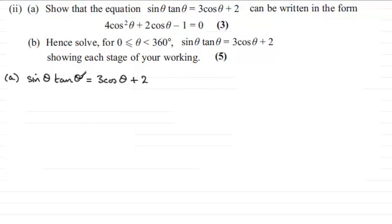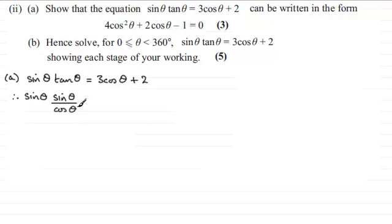Now tan theta, as we should be familiar with, is the same as sine theta divided by cos theta. So using that, we've got sine theta multiplied by sine theta over cos theta — the equivalent of tan theta — and that's going to equal 3 cos theta plus 2. So we've introduced another cos theta into our equation.